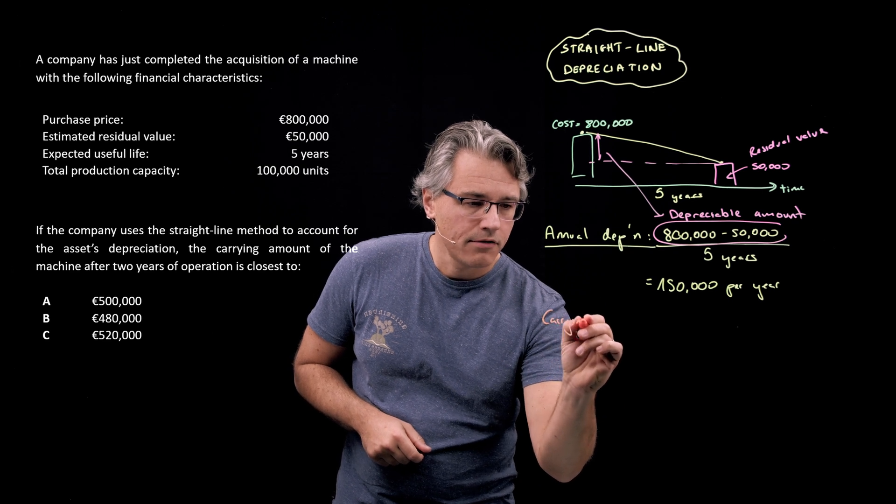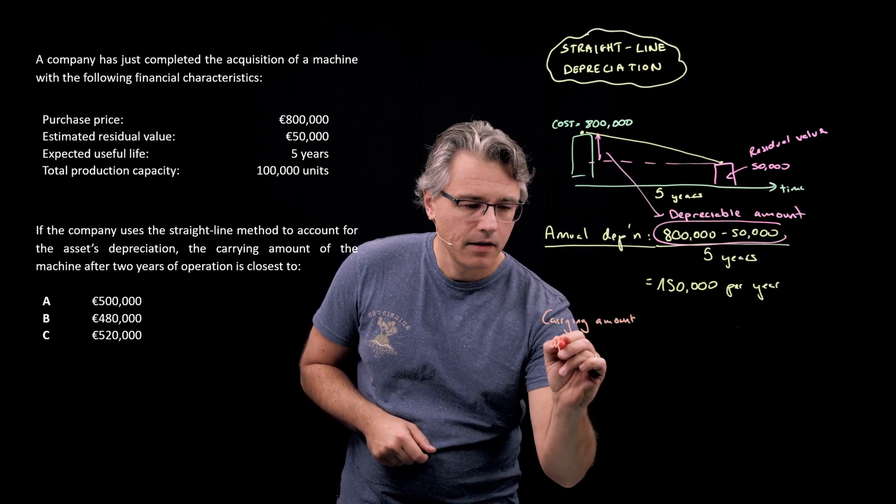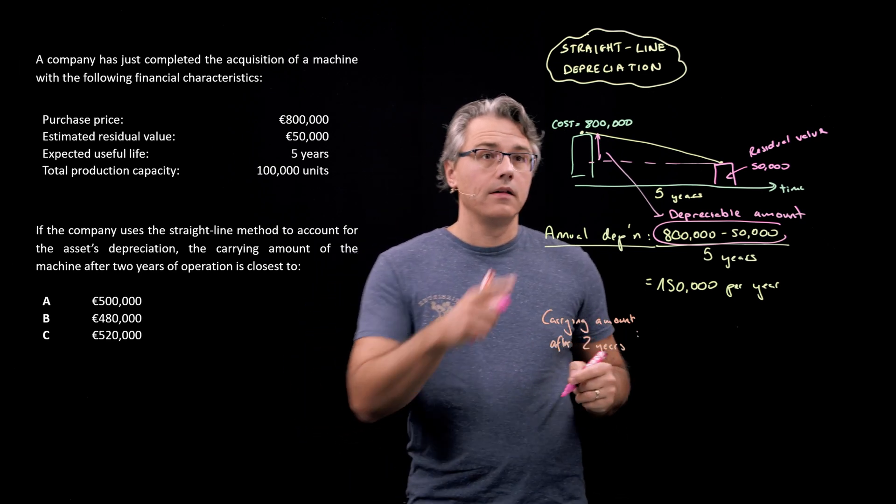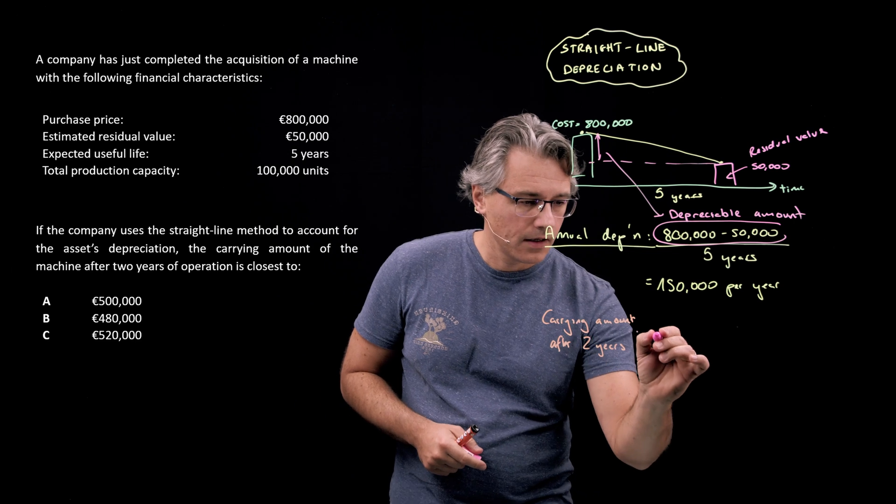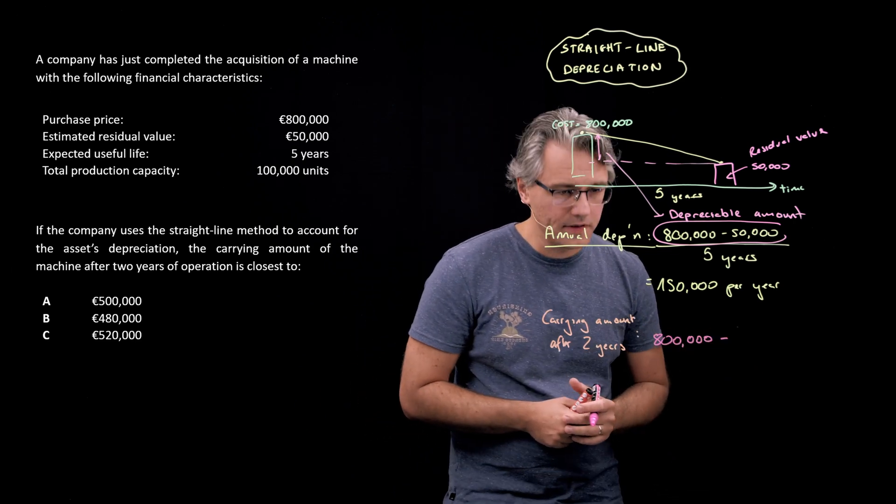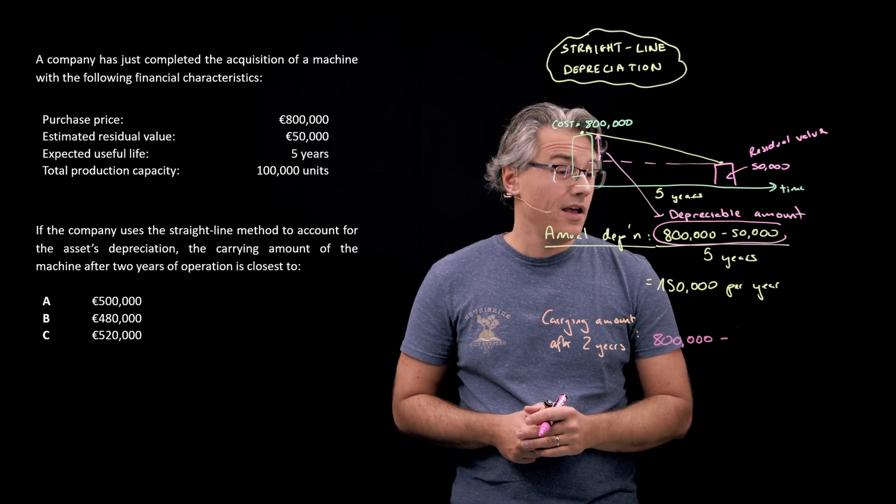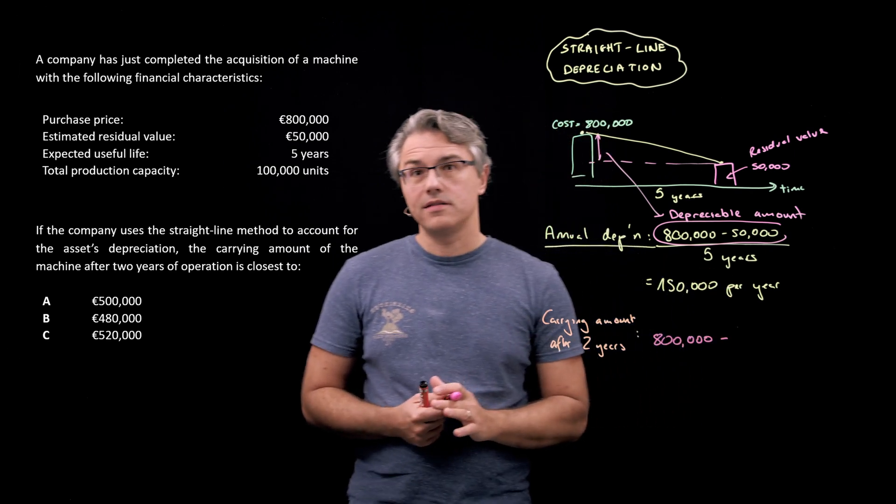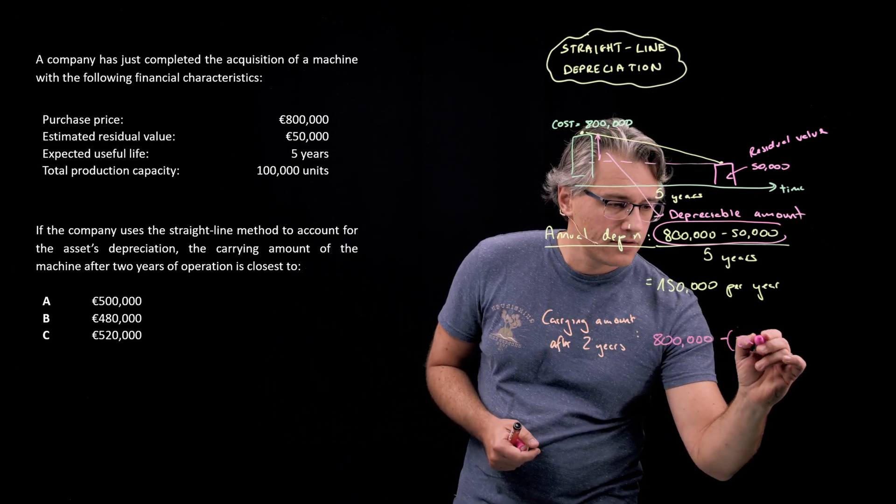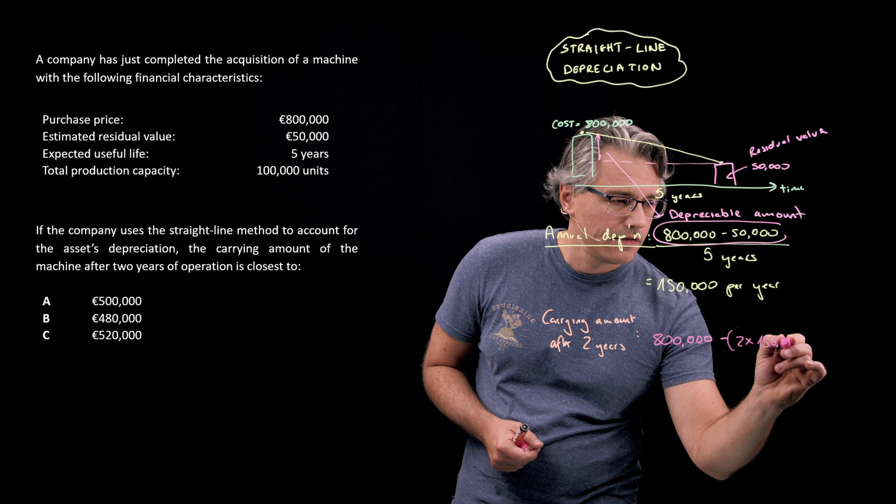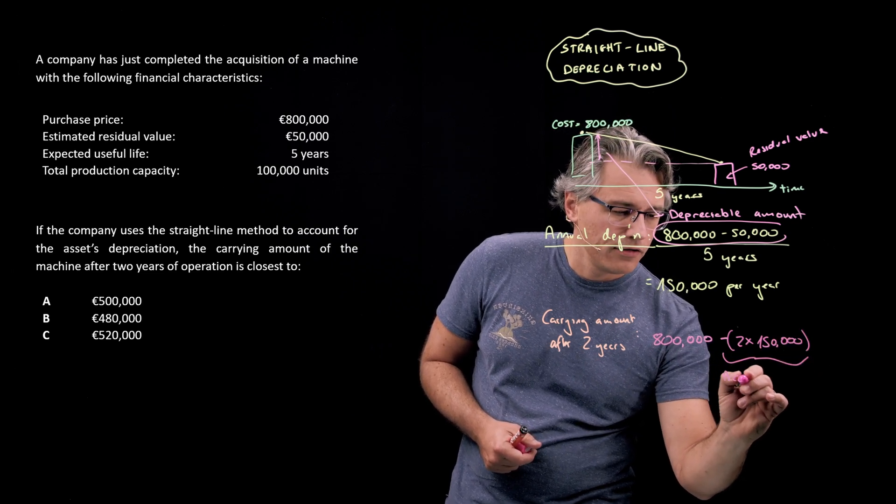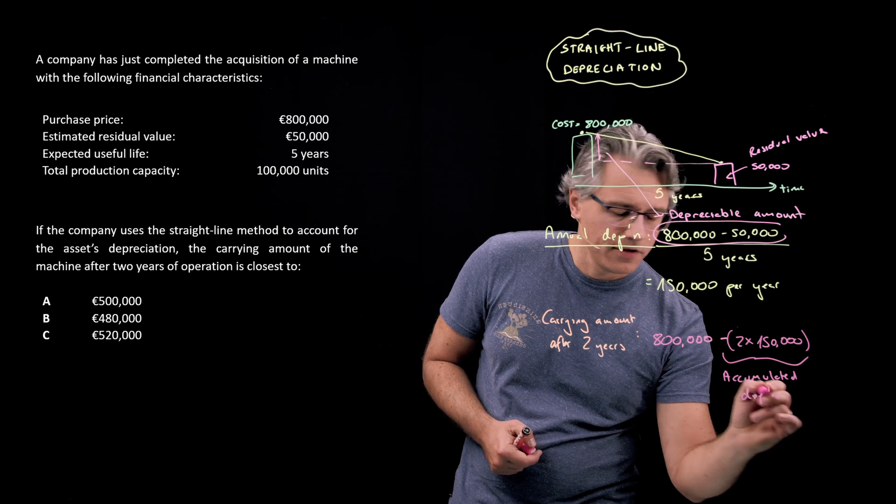Easy. Carrying amount after those two years is computed as the original cost, €800,000, minus accumulated depreciation for the two years. And because depreciation gets done at €150,000 per annum, that's going to simply be two lots of €150,000.